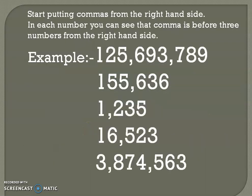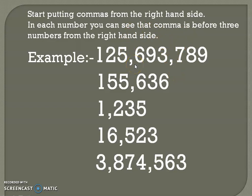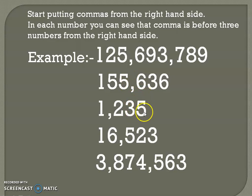I hope you understood how you can separate the number and how you can write it in words. Let's see a few more examples. This number has nine digits — before three numbers, before three numbers, we have kept the comma. This next number has six digits — before three numbers, three numbers, and three numbers.